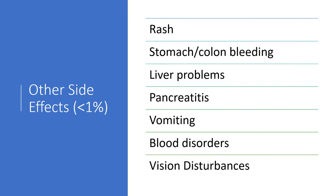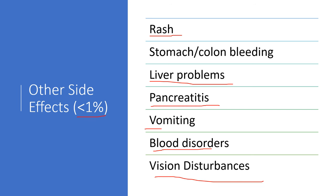Other side effects in the less than 1% category: rash, sometimes very severe, which would require you to seek medical attention. Stomach and colon bleeding — that's typically when this medicine is used long term, and it increases the risk of ulcers and lacerations in the colon. Liver problems can occur, as well as pancreatitis, vomiting, some blood disorders, and even problems with vision.